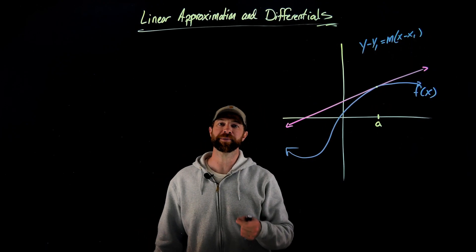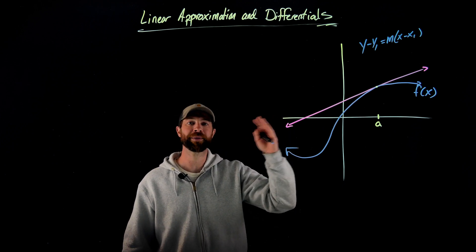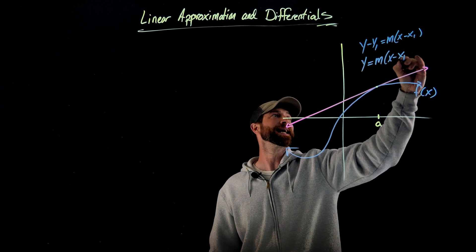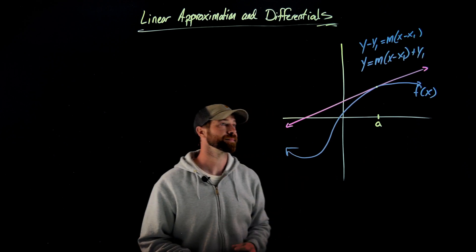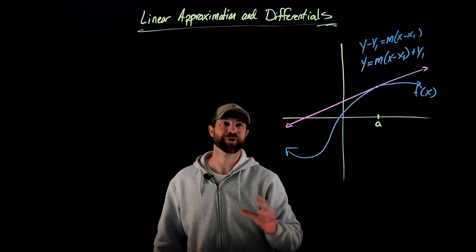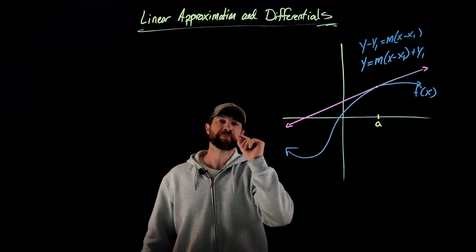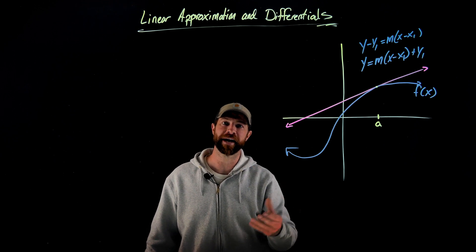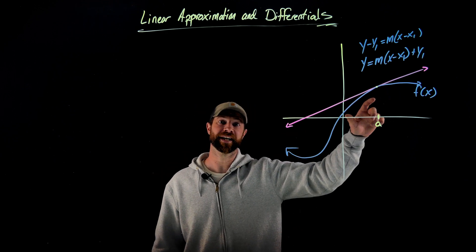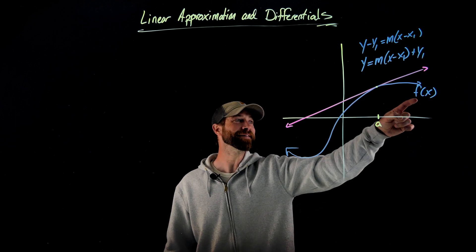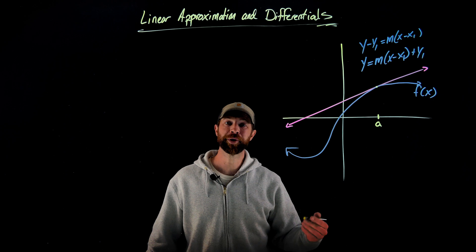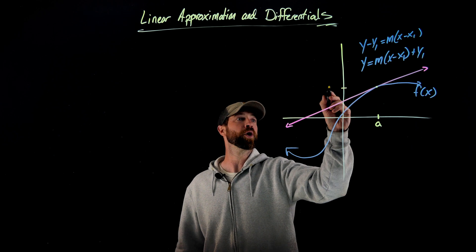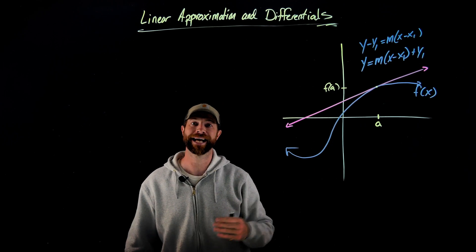We all know that m represents the slope. If we take this equation and add y1 to both sides, it would look like: y equals m times x minus x1 plus y1. All this linear approximation I'm about to show you is exactly that equation. But instead of m and y1, we're going to represent those values in terms of the function f of x. m, the slope of this tangent line, is simply the derivative of f of x at the value of a. The y value at x equals a is f of a, the function value at x equals a.